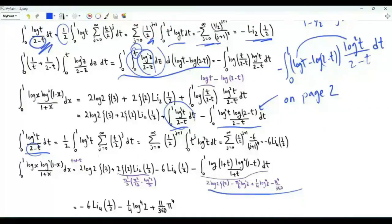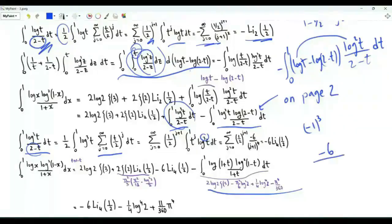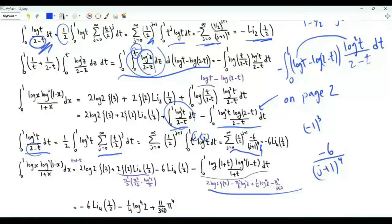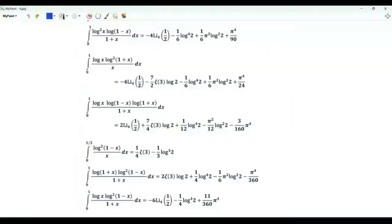With log³t we get (-1)³ × Γ(4) = -6 in the numerator and (j+1)⁴ downstairs, so the sum equals -6 Li₄(1/2), the polylogarithm of order 4 at argument 1/2. The final result for the integral from 0 to 1 of log(x) log²(1-x)/(1+x) is this expression minus log⁴(2)/4 plus π⁴ × 11/360. These are the five logarithmic integrals evaluated in this video.